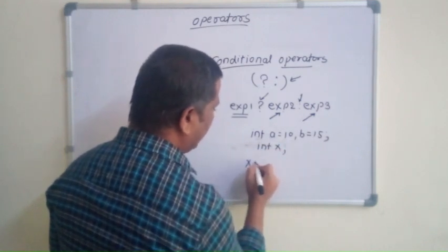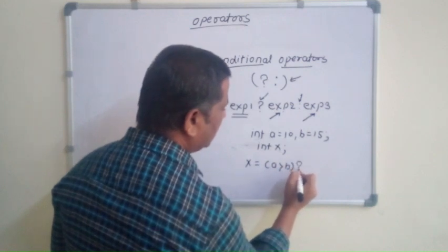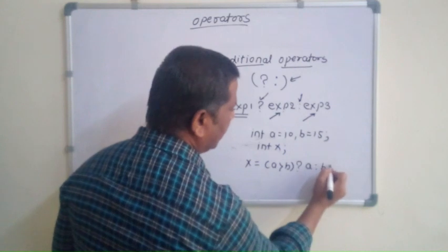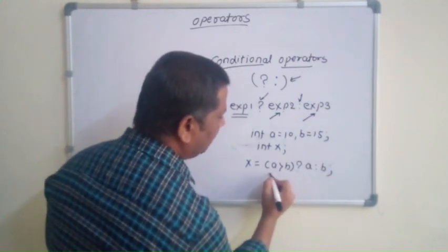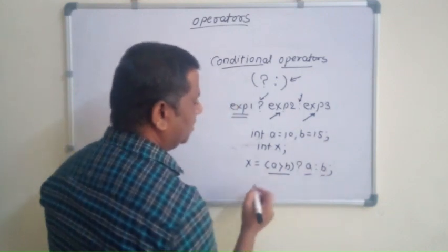So x is equal to a greater than b, question mark a, colon b. So this is our first expression. This is second expression and this is third expression.